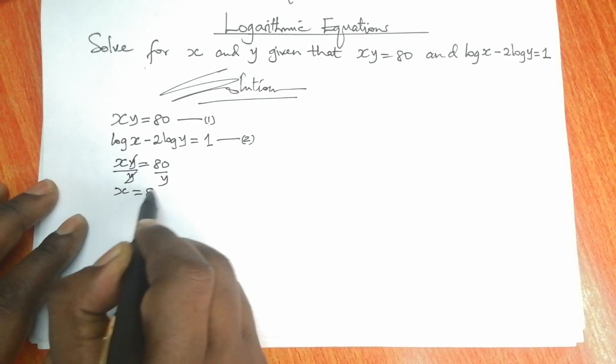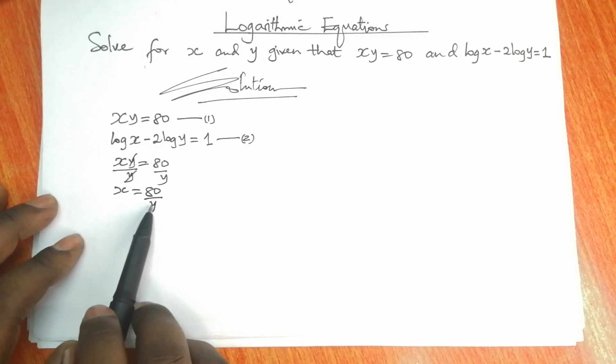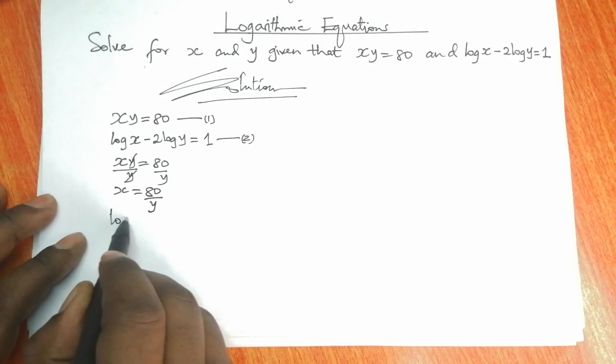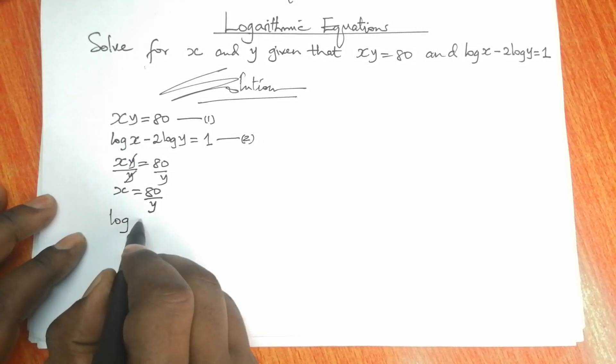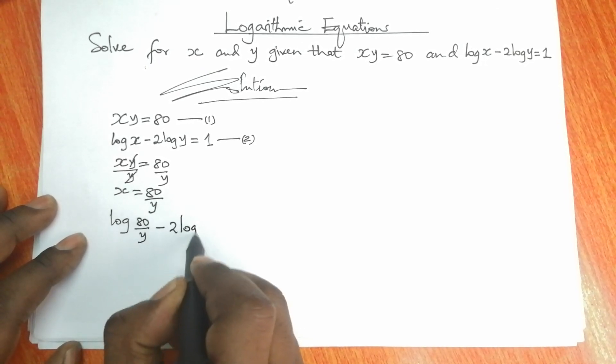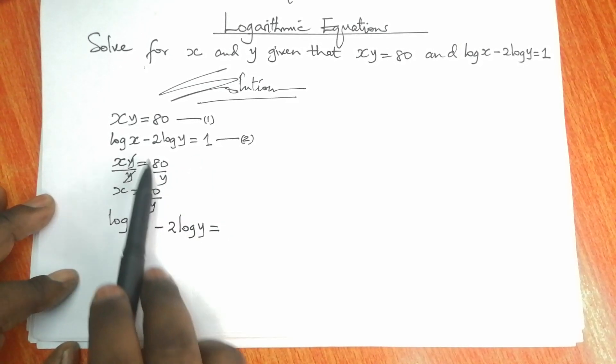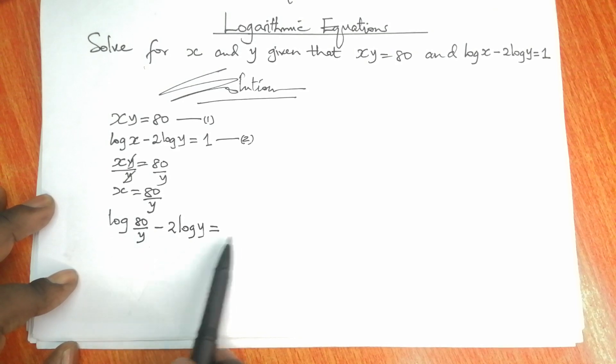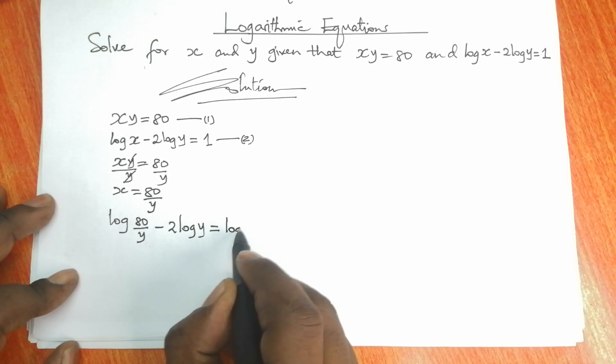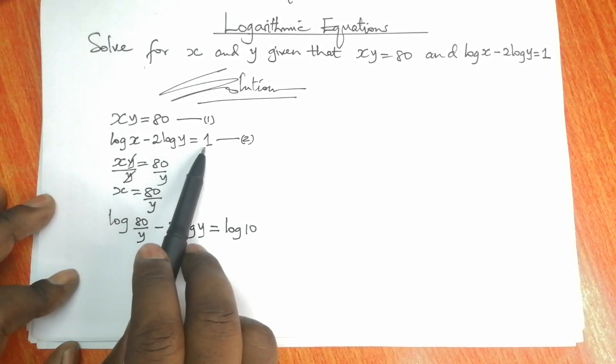Then we can substitute this in equation 2. In equation 2, we're going to have log x. Instead of x, we're going to have 80 over y minus 2 log y is equal to 1. We can introduce logarithms on both sides. We introduce logarithms, and the logarithm of 10 to base 10 is 1, so we're going to use log 10 instead of 1 here.